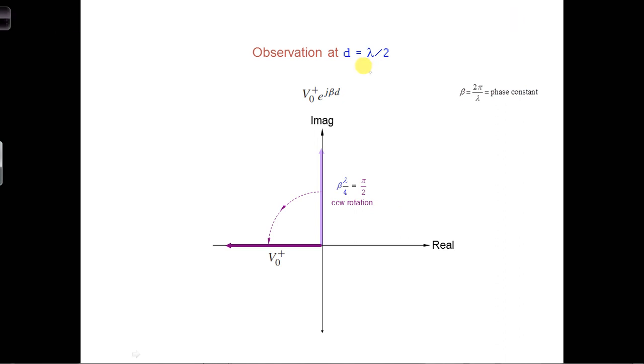At D equals lambda over 2, the exponential term of the voltage phasor simplifies to E to the J pi. This means the voltage phasor has rotated about the complex plane an additional pi over 2 radians as we've moved away from the load, further from D equals lambda over 4 to D equals lambda over 2.